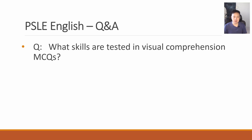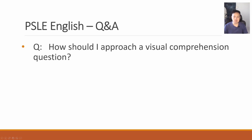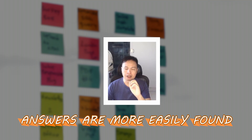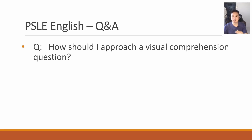How should I approach a visual comprehension question? Most of the time, just read the entire visual once over and read the questions once over before attempting to give answers. You should be able to see how the information is organized, which will help you quickly identify certain answers. If they're asking for details in the text section, jump to the text. If the information can only be found in the images, go to that part of the image to look for the answers. Annotate and do as much working as you can so that you understand exactly what is happening in the visual.